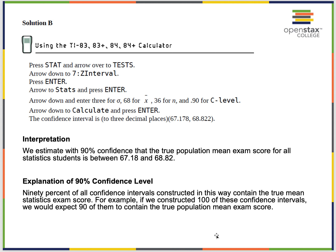We estimate with 90% confidence that the true population mean score for all statistics students is between 67.18 and 68.82. This means 90% of all confidence intervals constructed this way contain the true mean. If we do this over and over again, 90% of the time the mean will be in that range — that's what a 90% confidence interval really means.